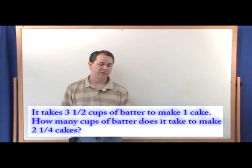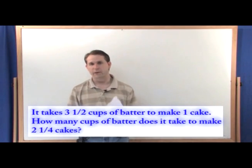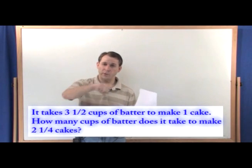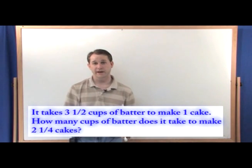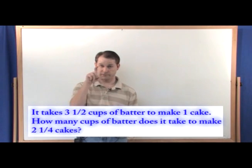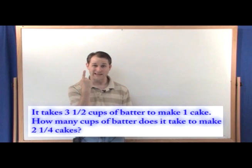This is an interesting problem because when you make a cake, you have to mix this batter together. You have eggs and flour and sugar and other things, and you mix it together and measure it in a cup, pour it in the cake pan and bake it. So what it's telling you is it takes three and a half cups of batter to make one cake.